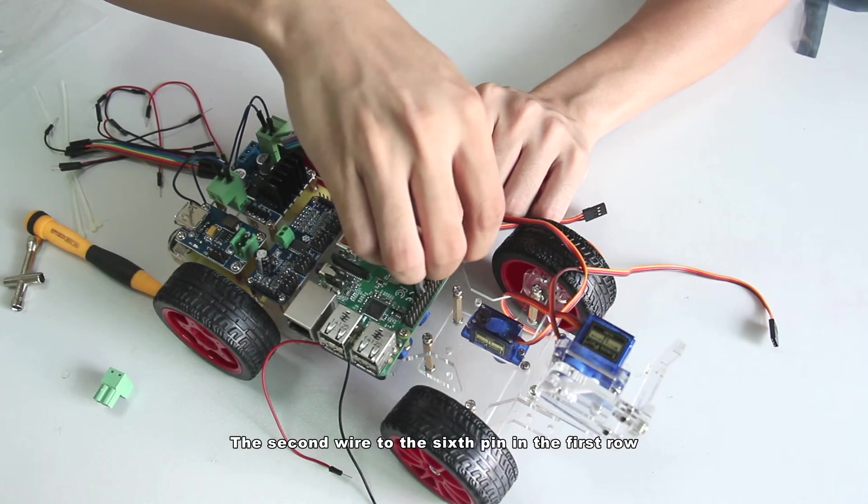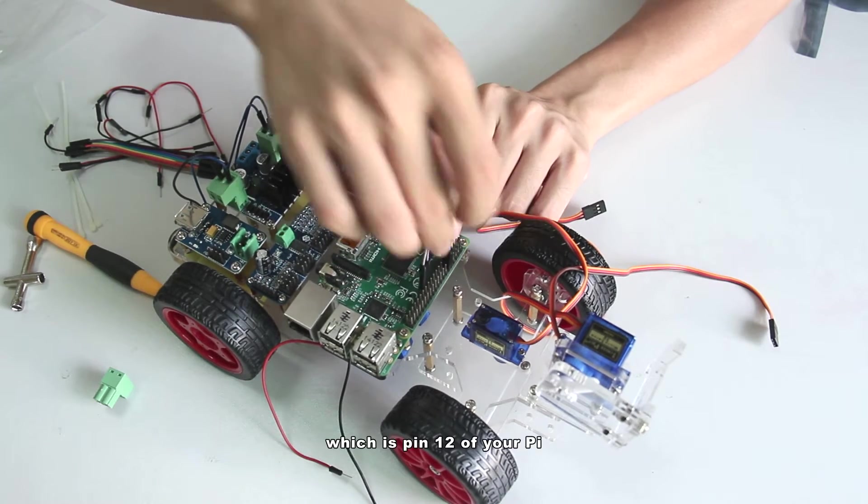The second wire to the 6th pin in the 1st row which is pin 12 of your Pi.